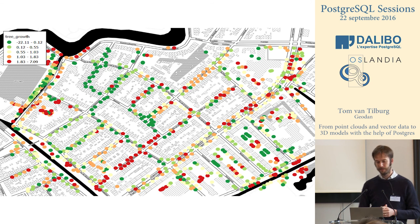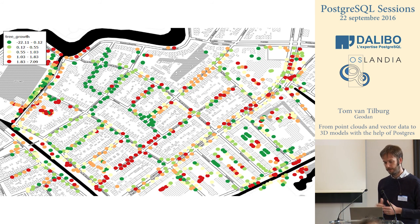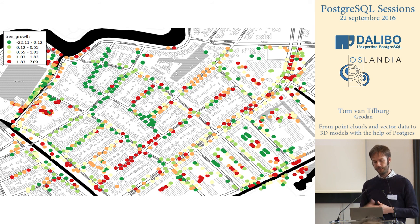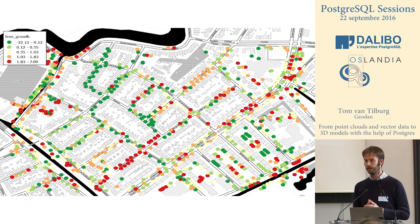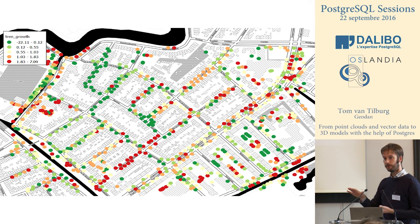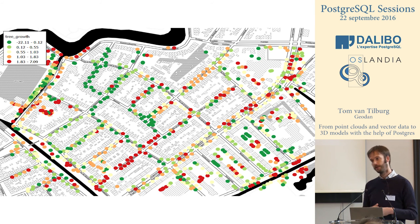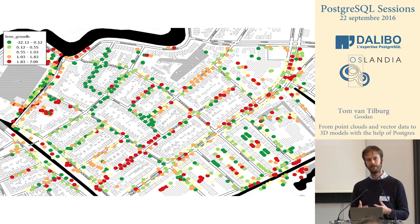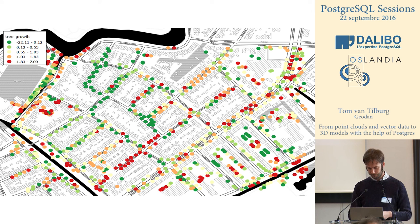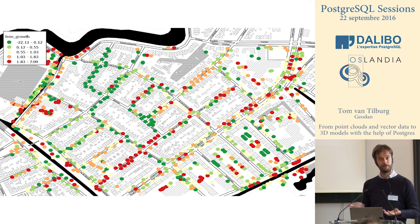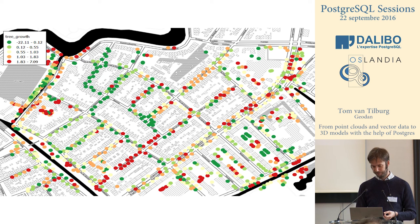Here is an example of a map made from the top. Trees which have grown are green; trees which are shrinking or not growing anymore are red. This gives an idea of how your area is doing — all with the help of just point clouds, which is relatively cheap data.